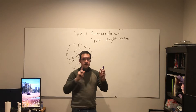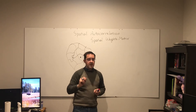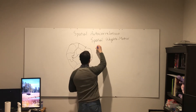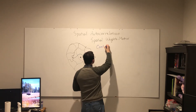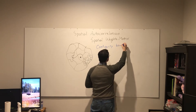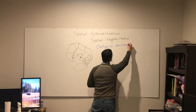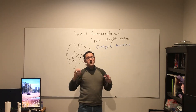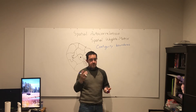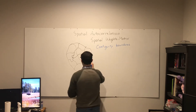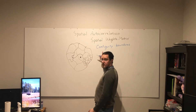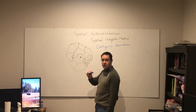The first approach is to look at boundaries. Does it share a boundary? Pretty straightforward. I will draw blue links for those neighboring units by the contiguity approach.